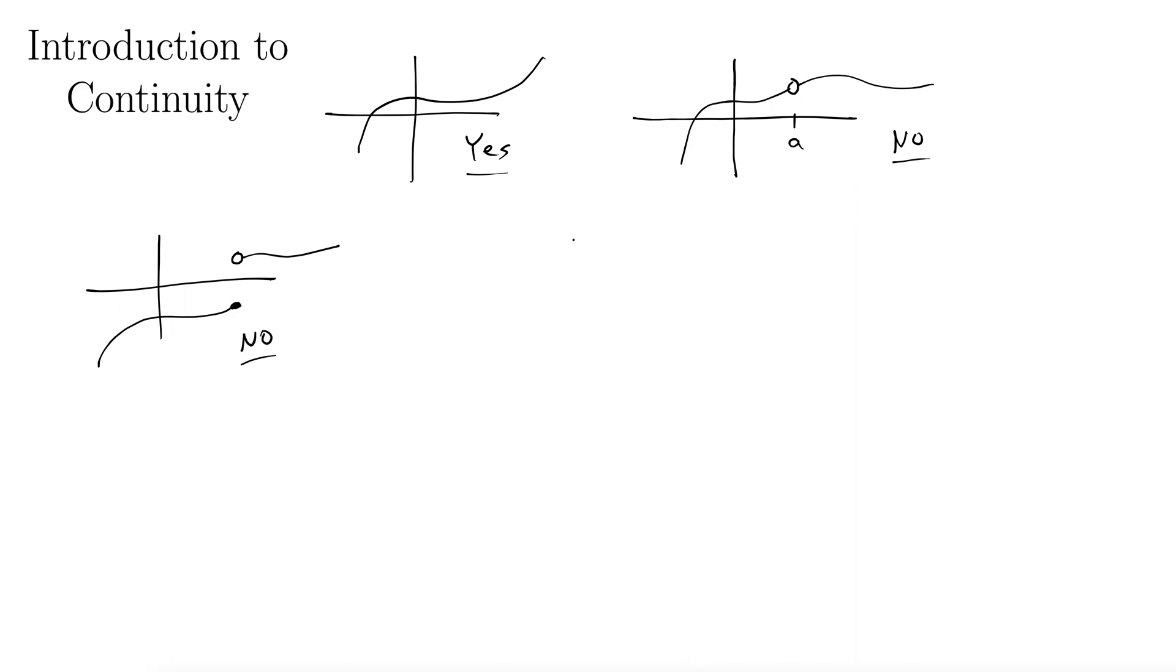Or maybe you have something like an asymptote. We all know what those look like. I don't know, maybe out here, and then a function might come up like this and go down like so. This clearly is not continuous. So if you need to pick up your pencil to draw the function, it's not continuous.